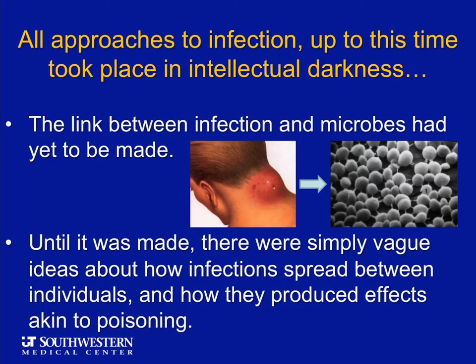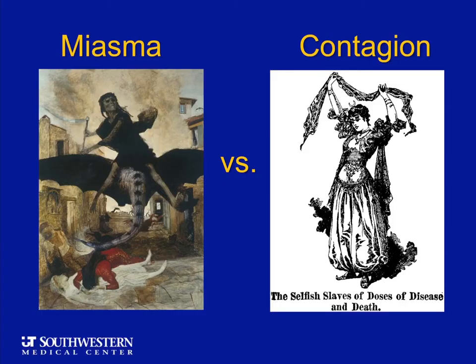All of these approaches took place in a kind of intellectual darkness, because no link had been made between infection and microbes — something so second nature today it's hard to imagine. There were simply vague ideas about how infection spread, and the main substance of argumentation was between those who favored the miasma model — airborne spread or some kind of flux — and those who insisted on direct contagion. The argument raged for a long time without anyone realizing it was completely missing the point.